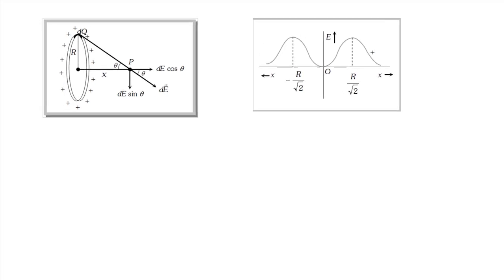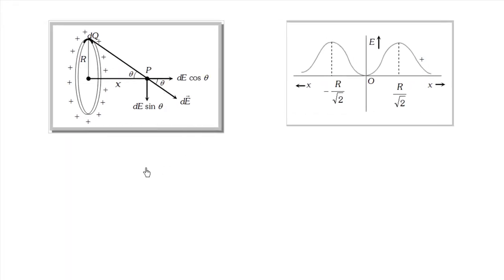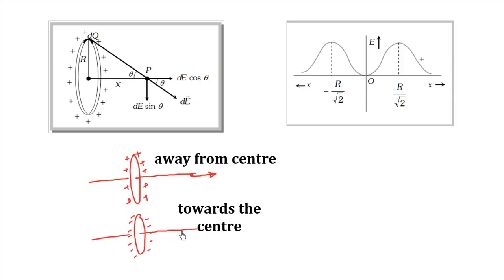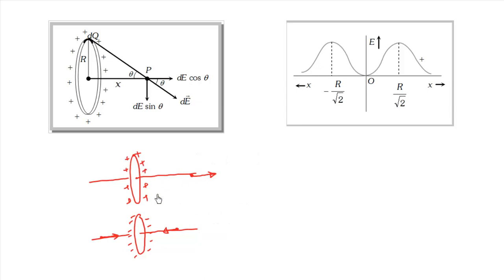We have found the electric field due to the ring on the axis. The electric field on the axis is along the axis. If the charge on the ring is positive, the field is away from the center but along the axis. If the charge is negative, the electric field on the axis is toward the center.